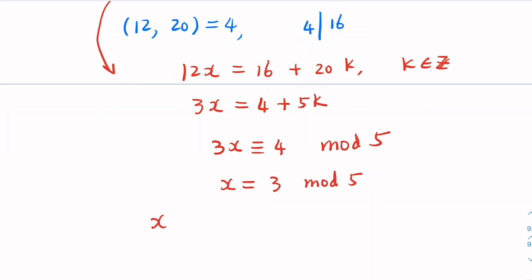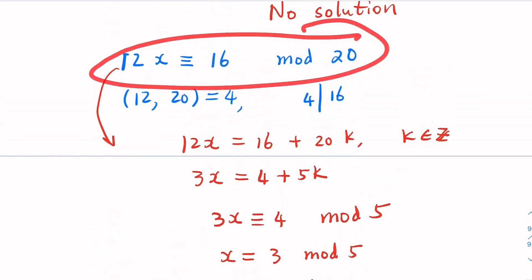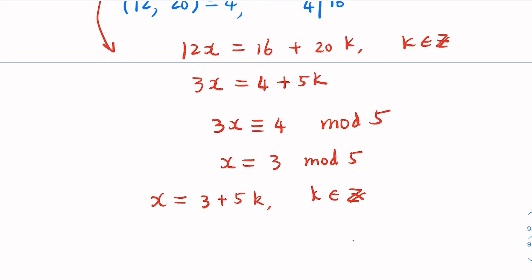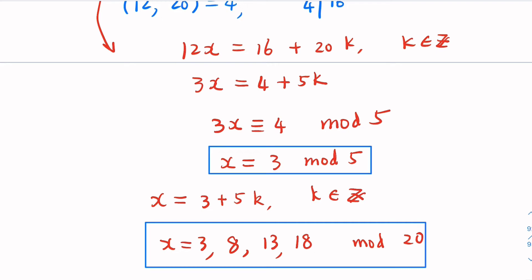Back to mod 20. So the x is going to be 3 plus 5k, where k is some integer. This x would satisfy the original equation. Now, if you want to express the solution in terms of mod 20, in our case, we just choose different value of k. When k equal to 0, x equals 3. When k equal to 1, x equal to 8. When k equal to 2, 13. k equal to 3, 18. And k equal to 4, that's greater than 20. So we stop right there. We have four solutions in terms of mod 20. Or, equivalently, this is the solution. Both would be the correct answer.